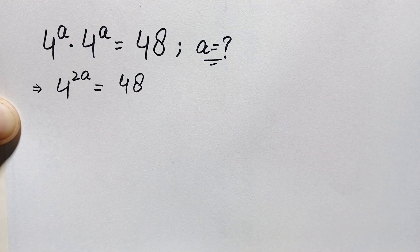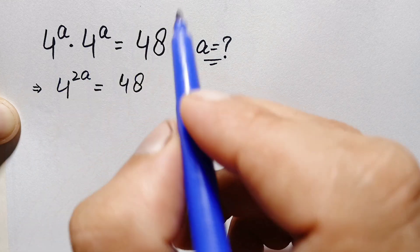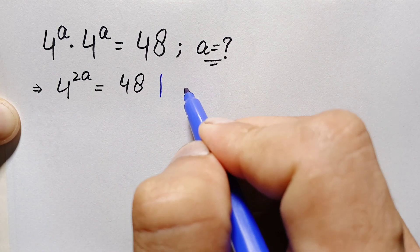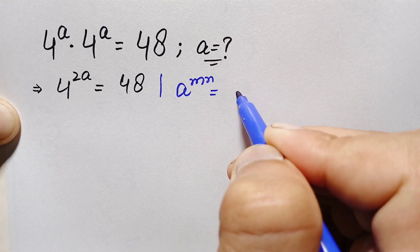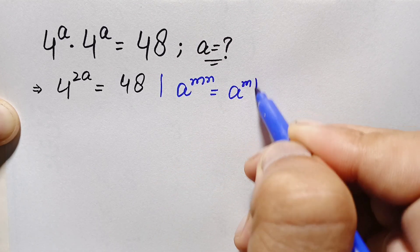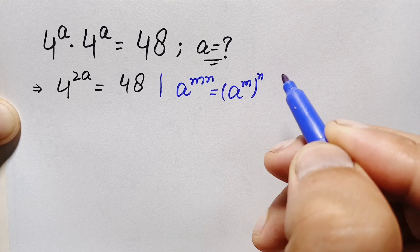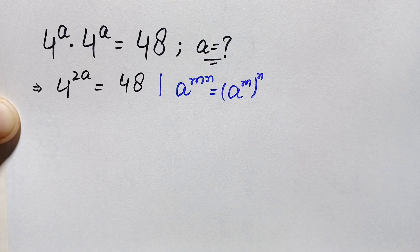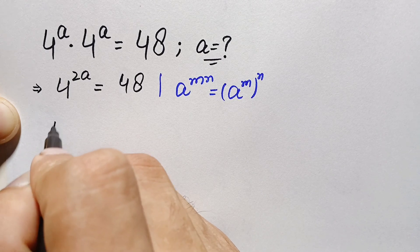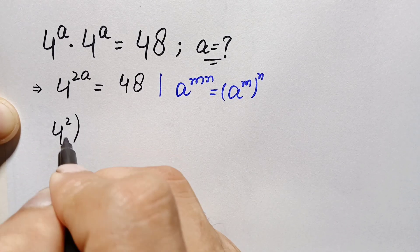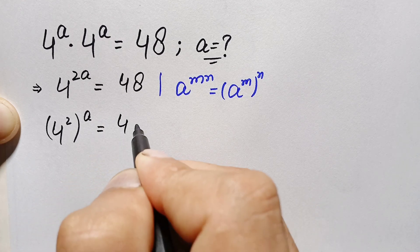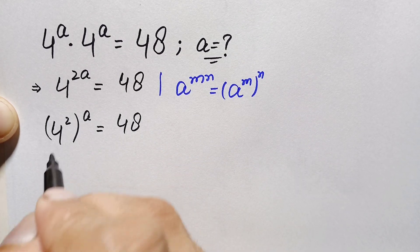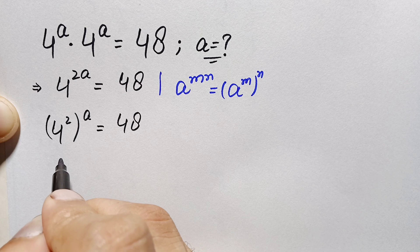Here on the left hand side we will use an exponential identity. We can write x raised to power m times n as x raised to power m, all raised to power n. Using this identity, we can rewrite this as 4 raised to power 2, whole raised to power a, equal to 48.